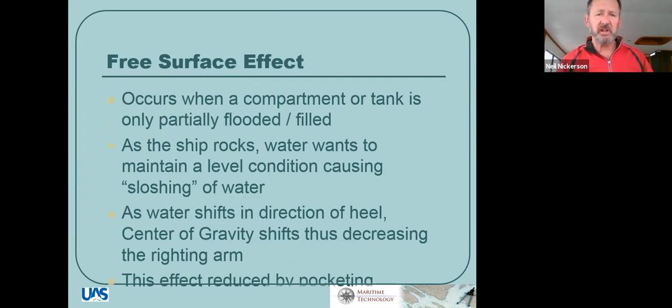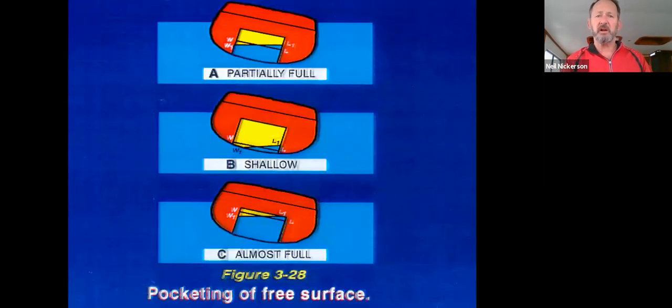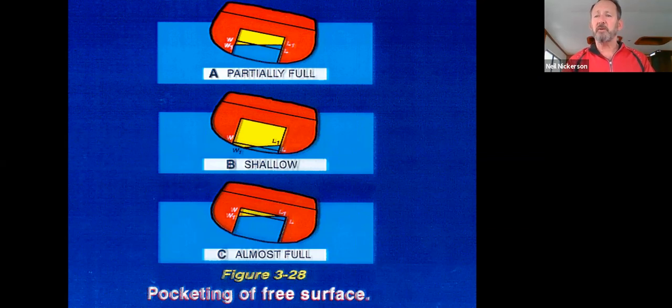We talked about free surface in class the other day. Free surface is when we have partially filled tanks. And let me just jump ahead to the slide here. Showing three different possibilities. We have a partially full tank, or we have pocketing, where we have either only a little bit of fluid down the bottom of the tank, or only a little bit of air at the top of the tank. In either one of those cases, there's pocketing.